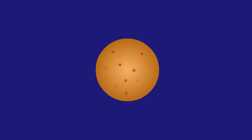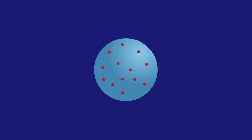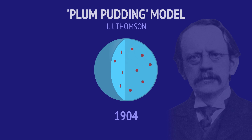In order to account for the existence of the electron, he needed to create an entirely new atomic model. Since it was already known that atoms were neutral, Thomson suggested that the negatively charged electrons were randomly dispersed throughout a sphere of positive jelly that balanced their charge. He imagined electrons embedded in the positive sphere like pieces of fruit inside a pudding, hence his theory is called the plum pudding model.